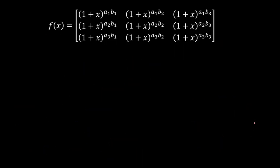Now using this same logic, since f(x) will be a polynomial once we open the 3×3 determinant, the coefficient of x equals f'(0). So we differentiate f(x), which is given as a 3×3 determinant, row-wise. This means f'(x) will be the sum of three determinants: one where we differentiate row 1 and keep rows 2 and 3 intact, and so on.